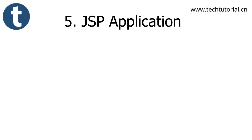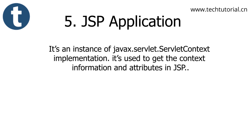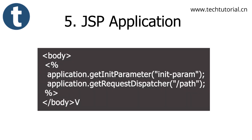The JSP application object is an instance of ServletContext implementation. It is used to get context information and attributes in JSP. For example: application.getInitParameter("initParameter"), and application.getRequestDispatcher("/path").